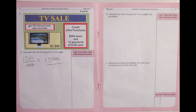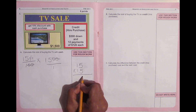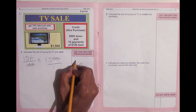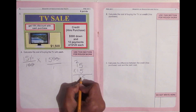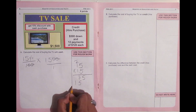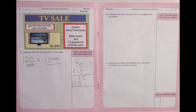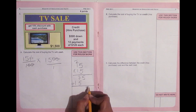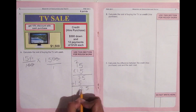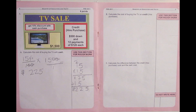Now we're left with 15 times 15. We multiply: 5 times 5 is 25, bring down the 5, carry the 2; 5 times 1 is 5 plus 2 is 7; at the tens place, 1 times 5 is 5 and 1 times 1 is 1. We add this together: bring down 5, 7 plus 5 is 12, bring down 2, carry the 1; 1 plus 1 is 2.